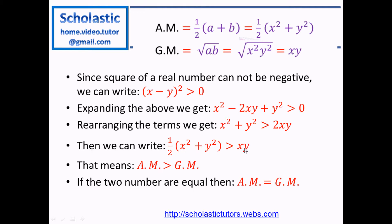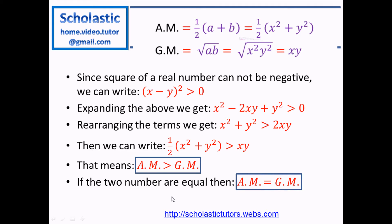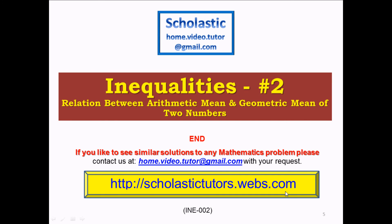Then 2x squared divided by 2 becomes x squared. And if x equals y, the geometric mean becomes x times x, which is also x squared. So x squared equals x squared — the equal sign holds in this case. That is, if you have two numbers a and b equal, then x and y become equal, and the sign becomes equal, meaning arithmetic mean equals geometric mean. These are the two conditions: arithmetic mean is greater than GM when a is not equal to b, and arithmetic mean equals geometric mean when a equals b. End of the solution. Thank you.